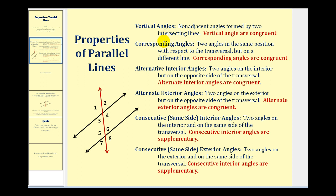In the previous video, we defined the different types of angles formed when a transversal cuts two lines. We'll go ahead and review that, as well as state how they relate to one another. Vertical angles are non-adjacent angles formed by two intersecting lines, and we know from before that these angles are congruent. So angle one and four are vertical angles and congruent.